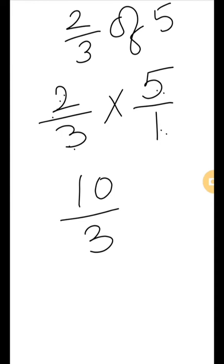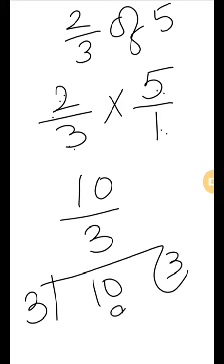Now write the answer as a mixed fraction. Convert 10/3 into mixed fraction. Divide 10 by 3. 3 threes are 9, remainder is 1. The mixed fraction is 3 and 1/3.